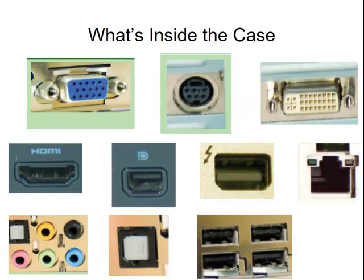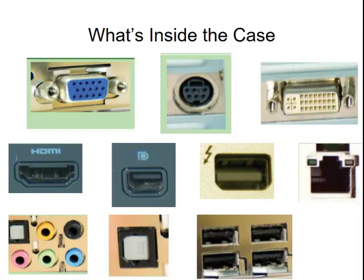Let's take a look at more ports you should be able to identify on a computer case. I've included the DB15 here blown up so you can see those three rows of five pins. And here again is the S-Video port. To the right of that we have a new one — this port is also a video port. This is the DVI, which stands for Digital Video Interface. You can identify DVI ports by that general look of rows of female ports. There are a few different styles we'll cover later. Importantly, DVI supports both digital and analog video, which is a big difference from the DB15, which is analog only.